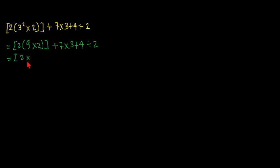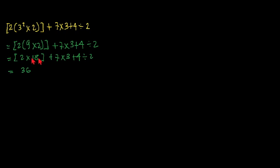So we have 2 times 18, plus 7, times 3, plus 4, divided by 2. So 2 times 18 would be 36. We have already simplified the bracket. So we have 36, plus 7, times 3, plus 4, divided by 2.